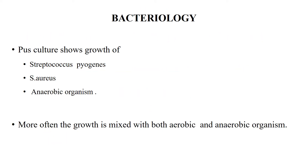The pus aspirate culture shows the growth of Streptococcus pyogenes, which is the most common, followed by Staphylococcus aureus and Haemophilus influenzae. Anaerobic organisms are also cultured. More often, the growth is of mixed type containing both aerobic and anaerobic organisms.